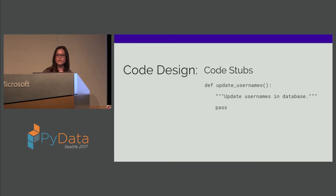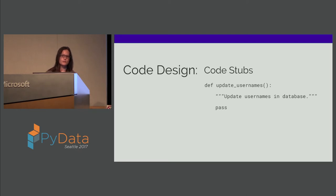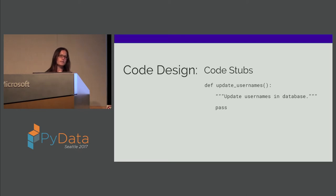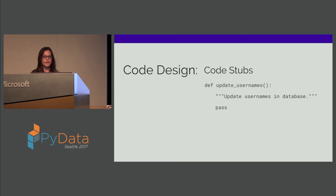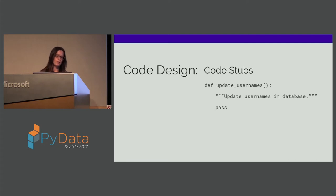This one's not as well known, even amongst developers, but I've worked under some incredible developers who, before they write real code, use code stubs. It's a way to think through what your project is doing, what the inputs and outputs are, what you need to return — and it'll help you avoid spaghetti code.